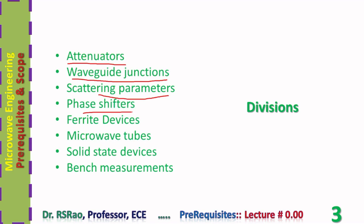New parameters designed to model circuits at microwave frequencies are called scattering parameters. Phase shifters are also studied — waves are traveling waves associated with continuous phase change along their propagation direction. Sometimes a need arises to introduce more phase shift into the wave; phase shifters serve that purpose. Ferrite devices use magnetic materials whose relative permeability is very large.